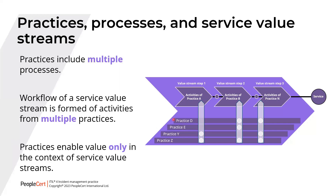We can see in the diagram that value stream step 1 may include certain activities of Practice A, step 2 may include activities of Practice B, and step 3 may include activities of Practice N. Also, apart from activities of Practice A, value stream step 1 may also include activities from Practices Y and Z.